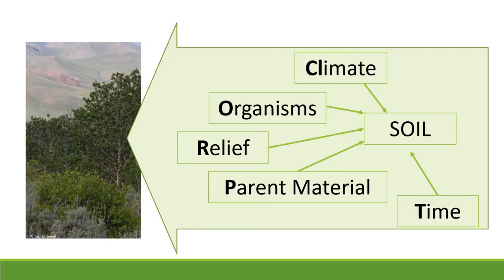The bottom line: when you have climate, organisms, relief, parent material, and time, you create soil. All of those things affect the type of vegetation on the site. So a good soil scientist is also a good botanist — they know the plants and plant communities because that reflects what soil is under the plants. Many soil maps were initially based on just plants, because depending on what plant is there, that tells you what kind of soil is below the surface.